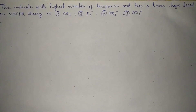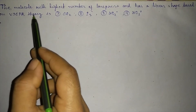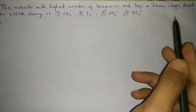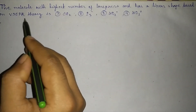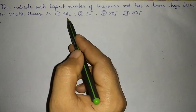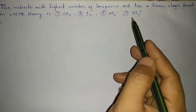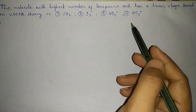Hello students! Today I have one question: which molecule with the highest number of lone pairs and a linear shape based on VSEPR theory is — CO₂, I₃⁻, NO₂⁻, or NO₂⁺?